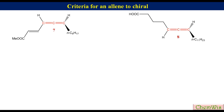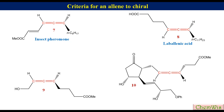Compounds 7 and 8 are examples of naturally occurring chiral allenes; compound 7 is an insect pheromone. Compounds 9 and 10 are examples of drug molecules having chiral allene functionality. Compound 9 demonstrates antifungal property. Compound 10, also called anthracetil, is a synthetic prostaglandin which inhibits gastric HCl secretion and is used for the treatment of gastric ulcer.